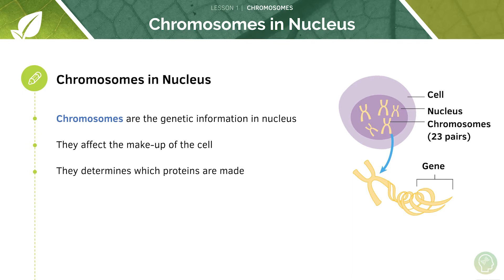Proteins are so important, which is why our genetic information is so important. As you can see here, it's stored in the nucleus in these chromosomes, and you can see these chromosomes are shaped a little bit like an X — we'll be talking more about that a bit later.